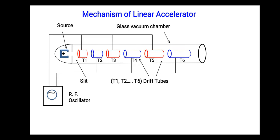Now this radio frequency oscillator generates an AC signal. So let us suppose during the positive half cycle of the AC signal, the tubes T1, T3, and T5 are at negative potential, and even numbered tubes, that means T2, T4, and T6, are at positive potential.